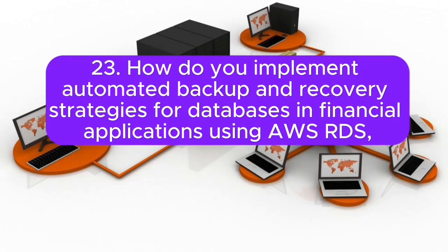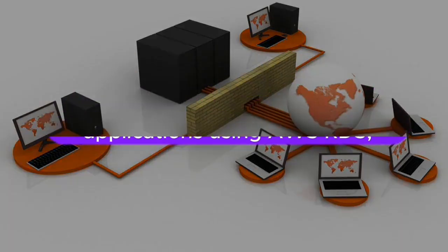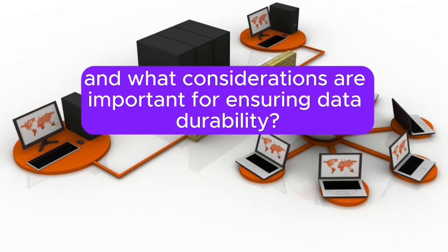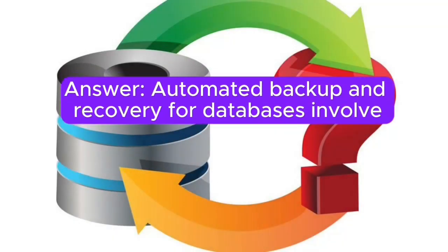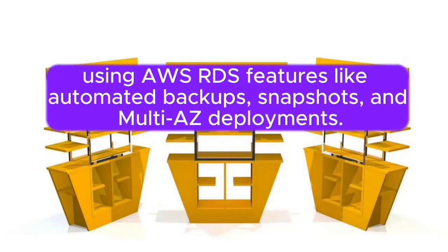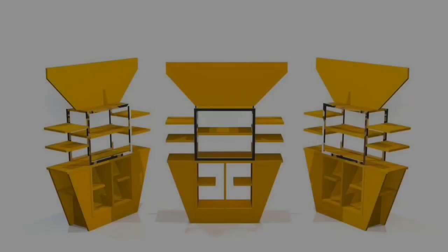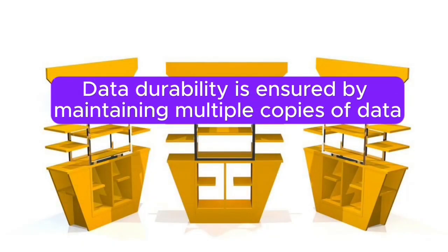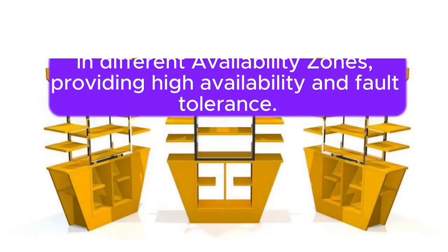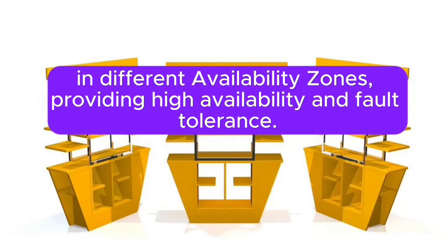Question 23: How do you implement automated backup and recovery strategies for databases in financial applications using AWS RDS, and what considerations are important for ensuring data durability? Answer: Automated backup and recovery for databases involve using AWS RDS features like automated backups, snapshots, and multi-AZ deployments. Data durability is ensured by maintaining multiple copies of data in different availability zones, providing high availability and fault tolerance.